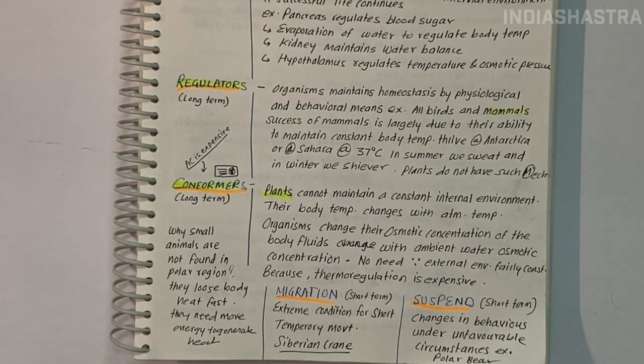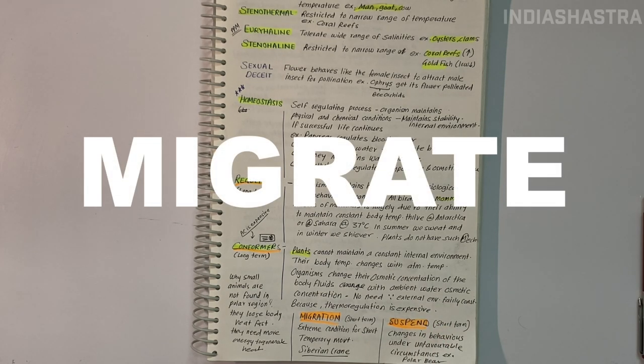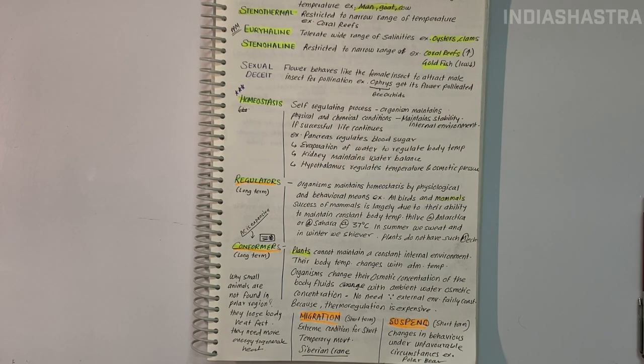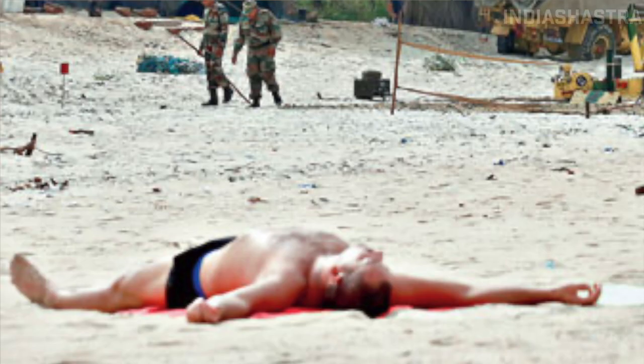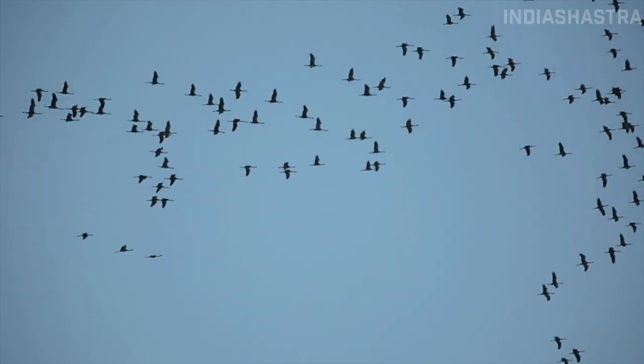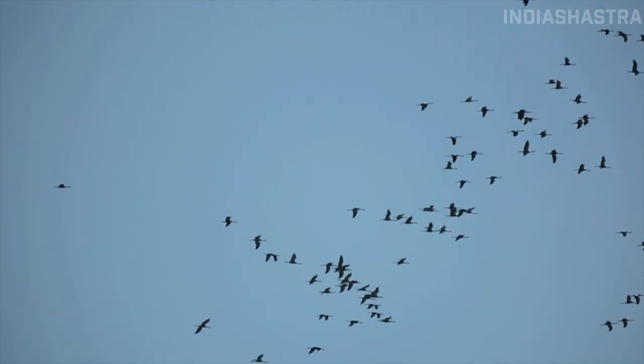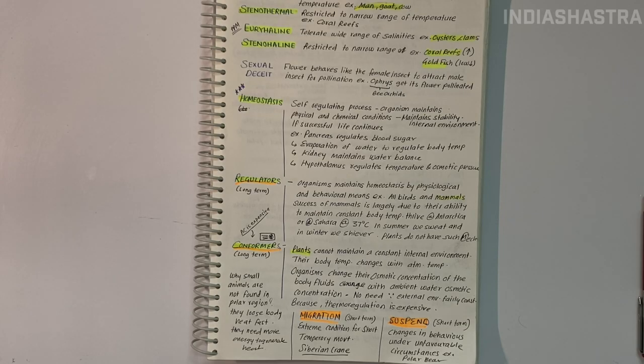Small animals like shrews or hummingbirds are conformers because they're too small. The heat they produce isn't enough to keep them warm. Small animals have larger surface area relative to volume, so they lose body heat fast when it's cold. They must expend much energy to generate body heat through metabolism. That's why very small animals are rarely found in polar regions. Some species can regulate over limited range, beyond which they conform. If they can't afford this, they migrate or suspend.